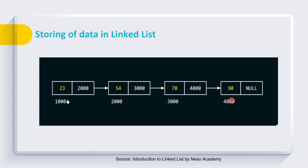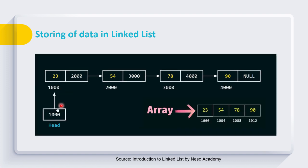This way they act as pointers and facilitate the traversal of the list from start to end. The question is: from where do we get the starting address? To achieve the starting address we have a concept of head node, where we store our starting address. In this case the starting address is 1000, so from the head node we get the starting address and then we can traverse the data from start to end.